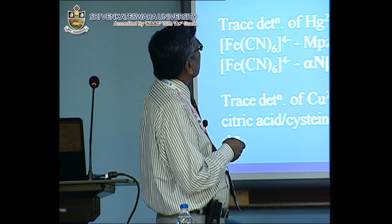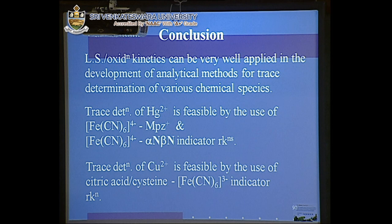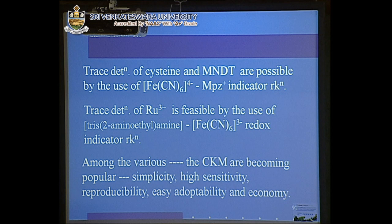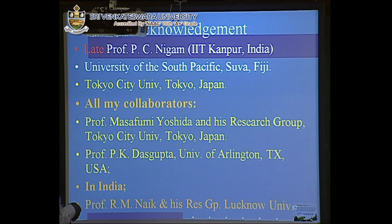We can conclude that based on ligand substitution reaction kinetics, or oxidation kinetics, these can be very well applied to the development of analytical methods for trace determination of various chemical species and toxicant species of biological interest, environmental pollutants, etc. Mercury determination is feasible by use of these reactions. Copper determination is feasible by use of two reactions. Among the various methods used, catalytic kinetic methods are becoming more popular because of their simplicity, high sensitivity, reproducibility, and economic advantage.